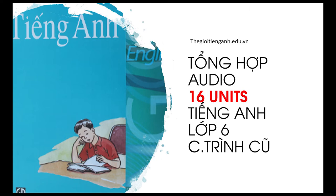Unit 7: Your House. Page 68. Section A: Is your house big? Listen, then practice with a partner. Is your house big? No, it isn't. It is small. Is it old? Yes, it is. Is there a yard? Yes, there is. Is there a well? No, there isn't. Are there any flowers in your yard? Yes, there are. Are there any trees? No, there aren't.